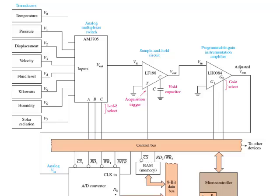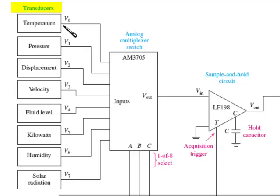So let's start up at the top of the transducers. Like I said before, the world is analog. And these are some of the analog values you may want to be able to look at in an automated system: temperature, that varies in an analog scale and outputs a voltage dependent on temperature; pressure transducer; displacement, that would be movement; velocity sensor for speed; fluid level; kilowatts, that would be the volts times amps, the amount of energy being consumed; humidity sensor; and solar radiation. So here's our eight analog sensors.